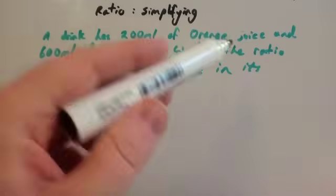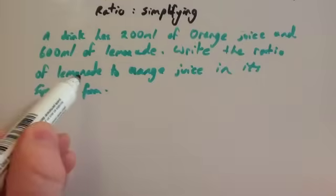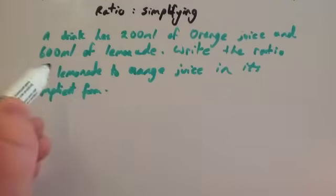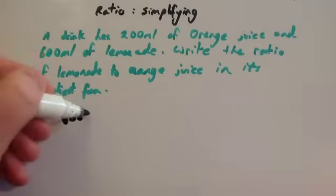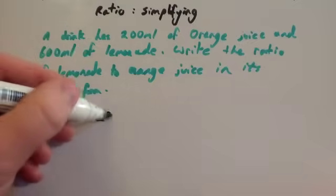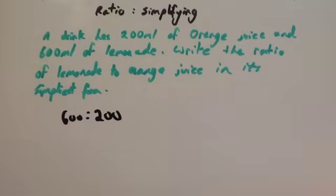Now, the first thing I notice about the ratios is the ratio of lemonade to orange juice. So the lemonade is 600 and the orange juice is 200. So that's the ratio in its unsimplified form. Now, what we need to do is simplify.